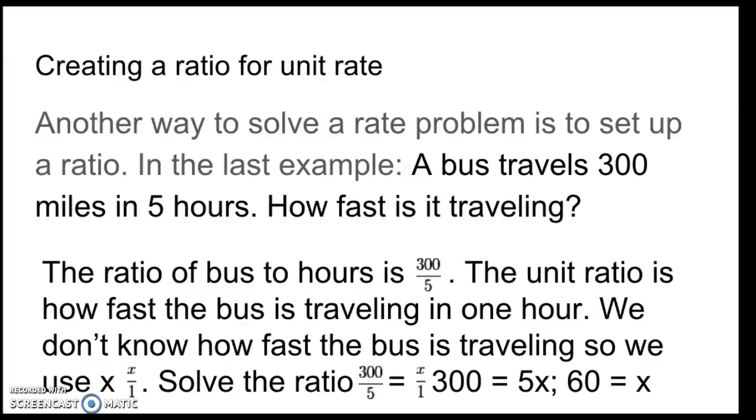then the ratios are equivalent. So, 300 over five, it will travel the same amount of miles every one hour. So, use a little algebra to solve this. 300 times one. Multiply both sides by one. And then multiply both sides by five. The five cancels out. I have 300 equals the one cancels out on the other side. Five times x.